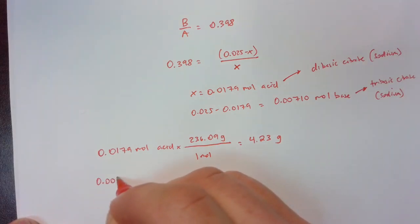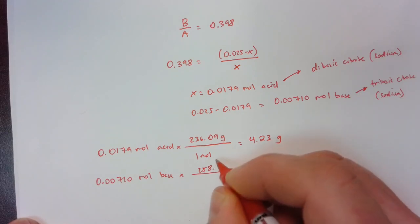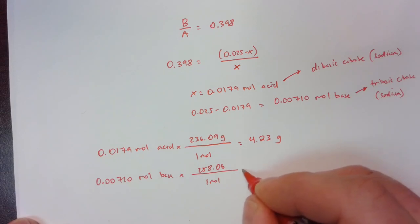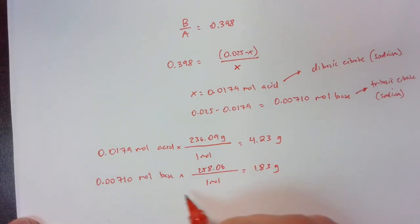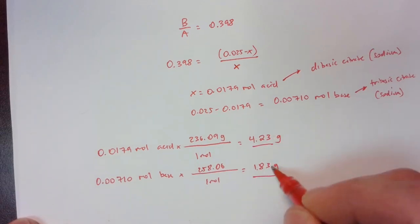And then for the base, the molar mass is more than that because there's one more sodium atom and one less hydrogen atom. So here's our two masses, one 4.23 and 1.83.